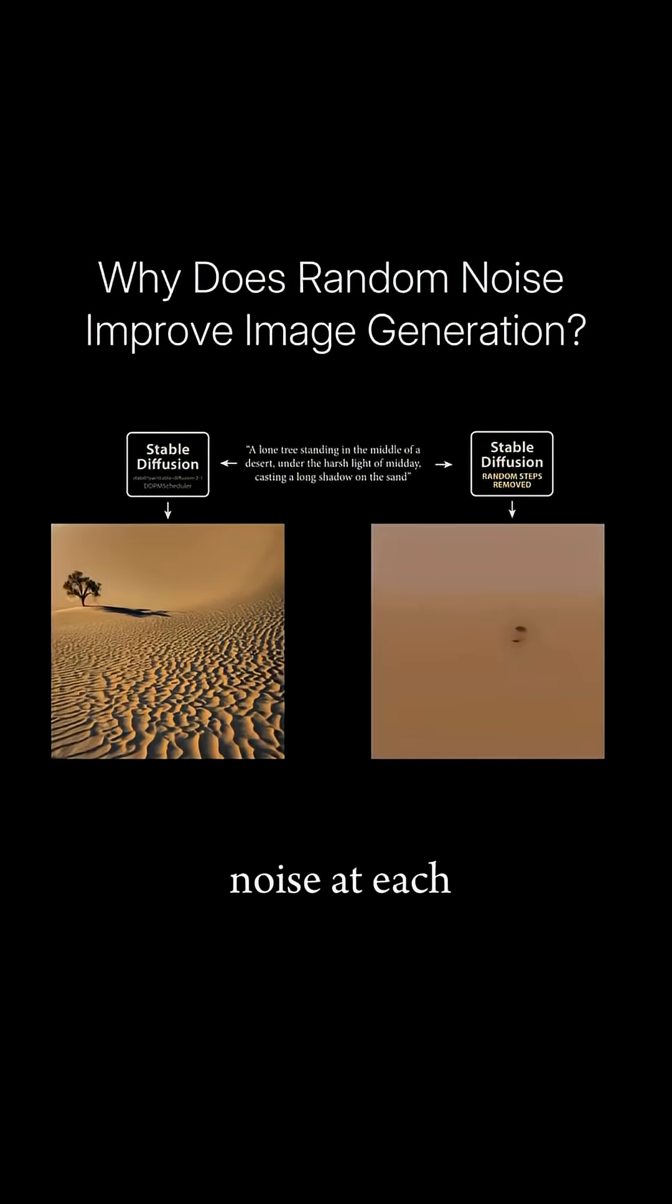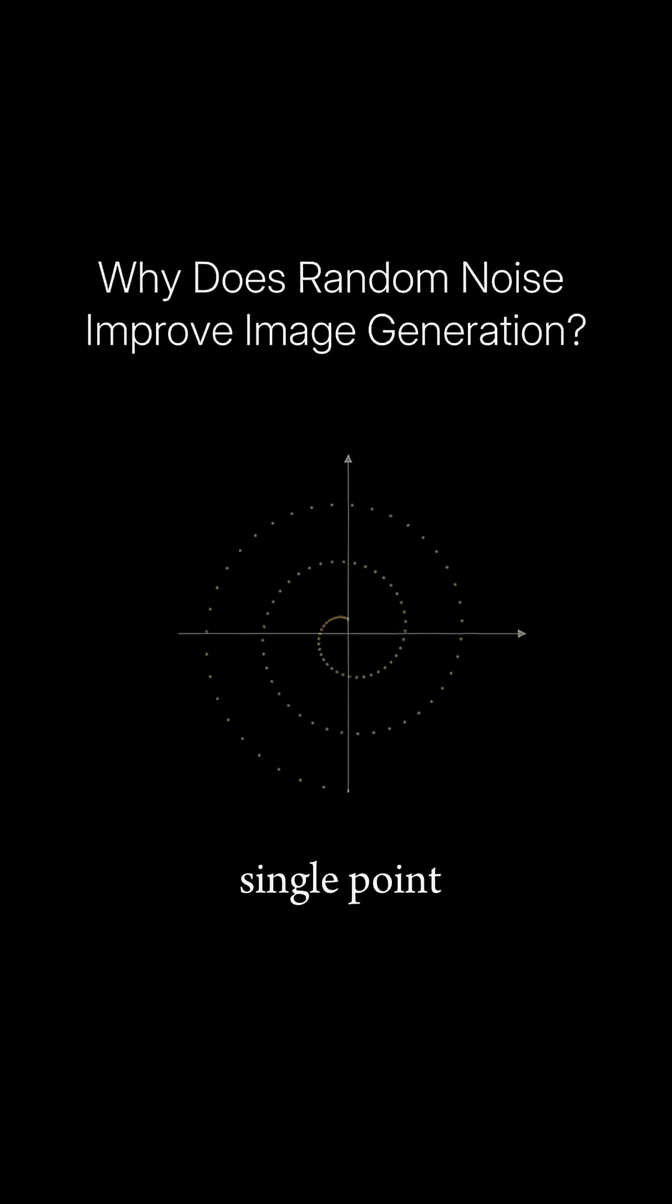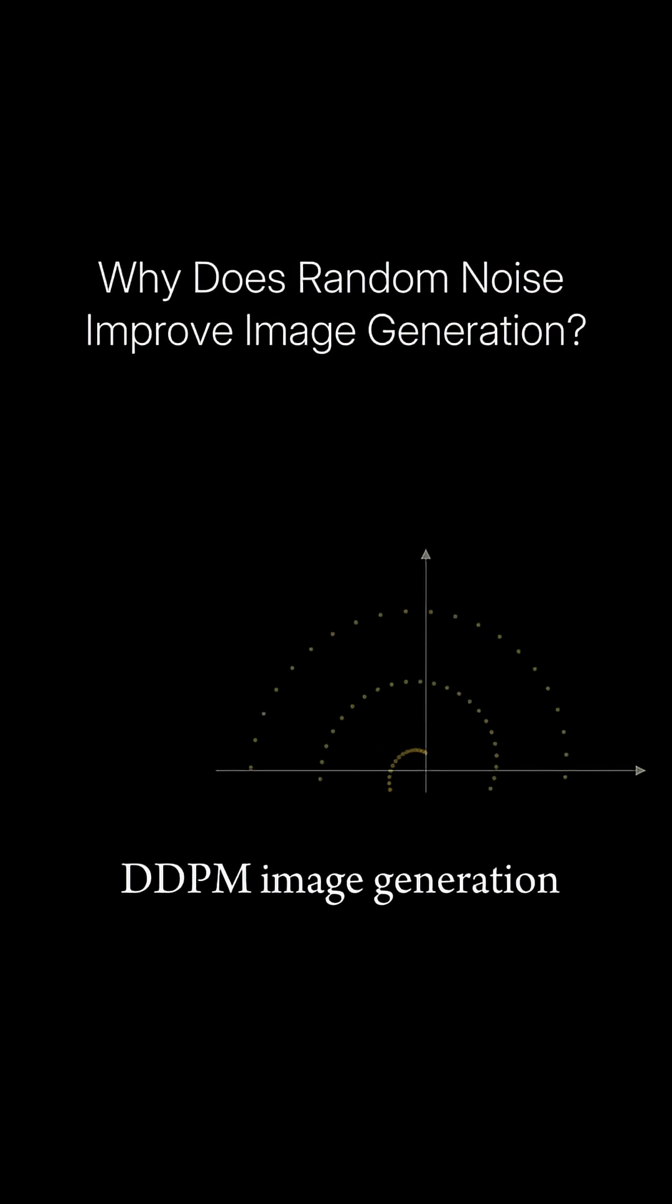How is it that adding random noise at each step while generating images leads to better quality, sharper images? Let's follow the path of a single point guided by the DDPM image generation algorithm.